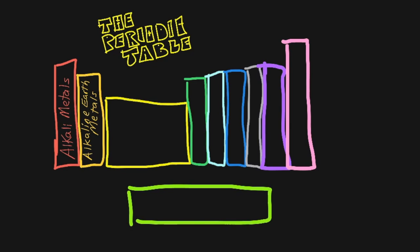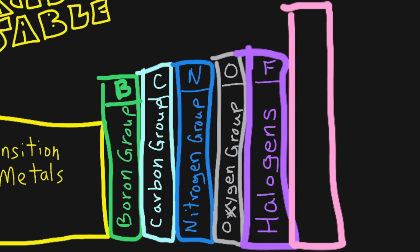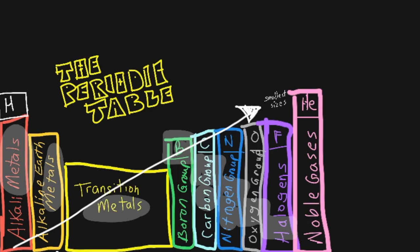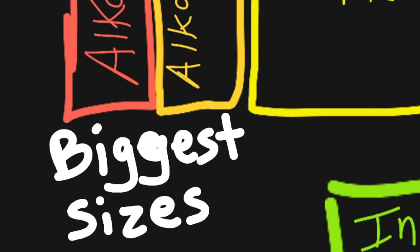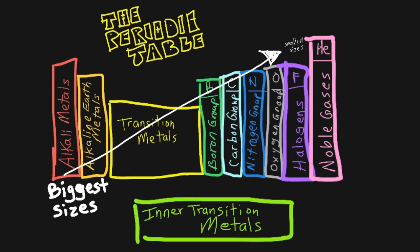Luckily, after watching this video, you'll be able to name the ten groups of elements, point out the metals, metalloids and non-metals, and recognize a pattern in the size of the atoms called the periodic trend for atomic radius.